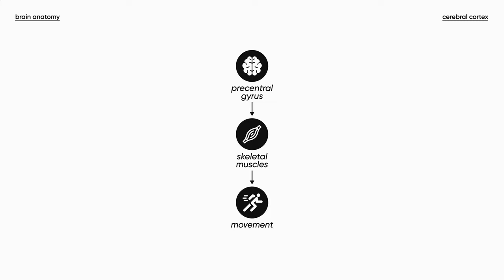The term voluntary means that we can control this process — meaning if we want to flex the arm, we actually flex the arm, and if we want to extend the leg, we extend the leg and so on. The key point here is that the primary motor cortex is responsible for our movements.